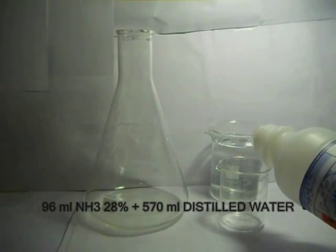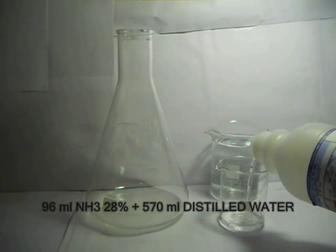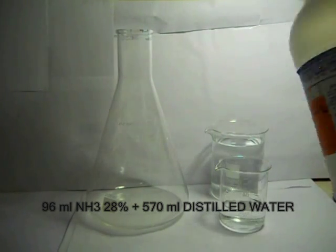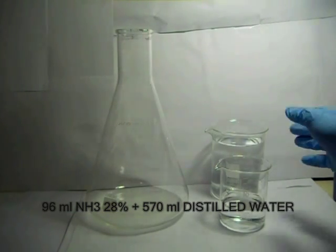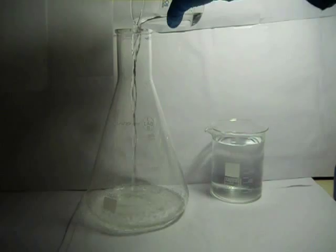Now, for the last part of the reaction, prepare a 5% ammonia solution by adding 96 ml of 28% ammonia to 570 ml of distilled water.